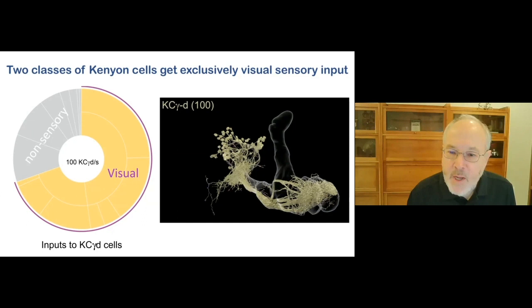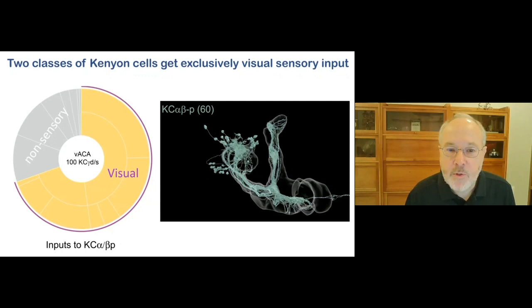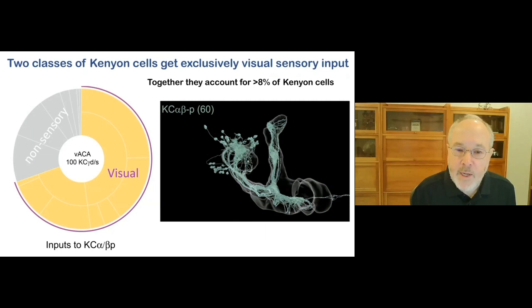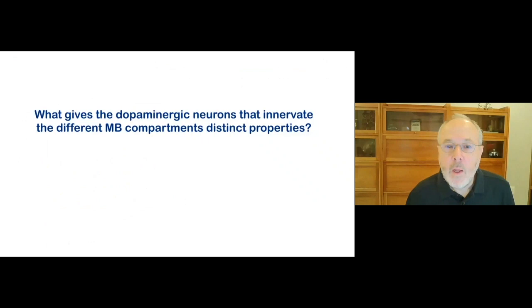We also found that the amount of visual as opposed to olfactory sensory information to the mushroom body was much greater than previously realized. And perhaps more importantly, this information was segregated into two distinct types of Kenyon cells, one of which is shown here. All sensory information appears to be visual and here is the second type with exclusively visual input. So these showed that nearly 10% of the input to the mushroom body was visual input. And these visual inputs were in distinct subsets of Kenyon cells.